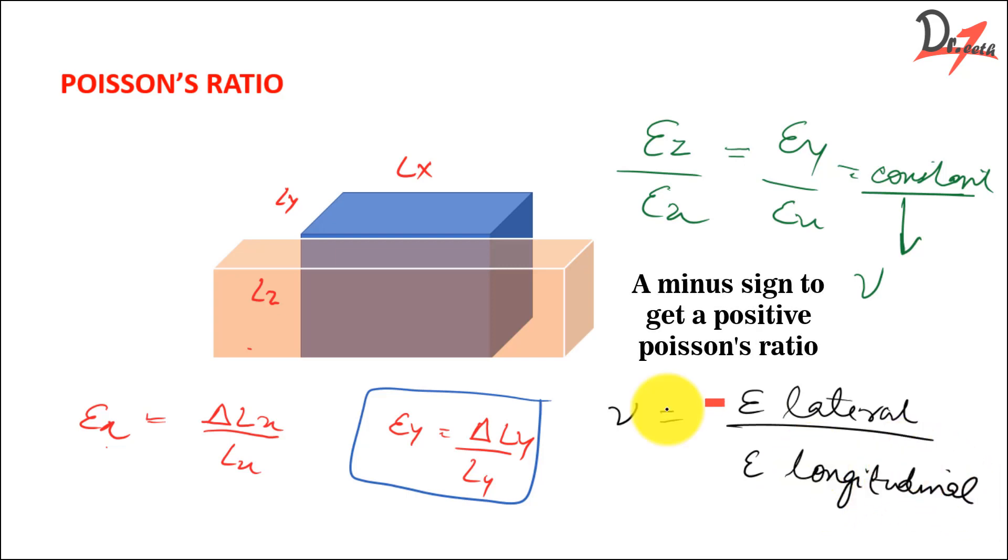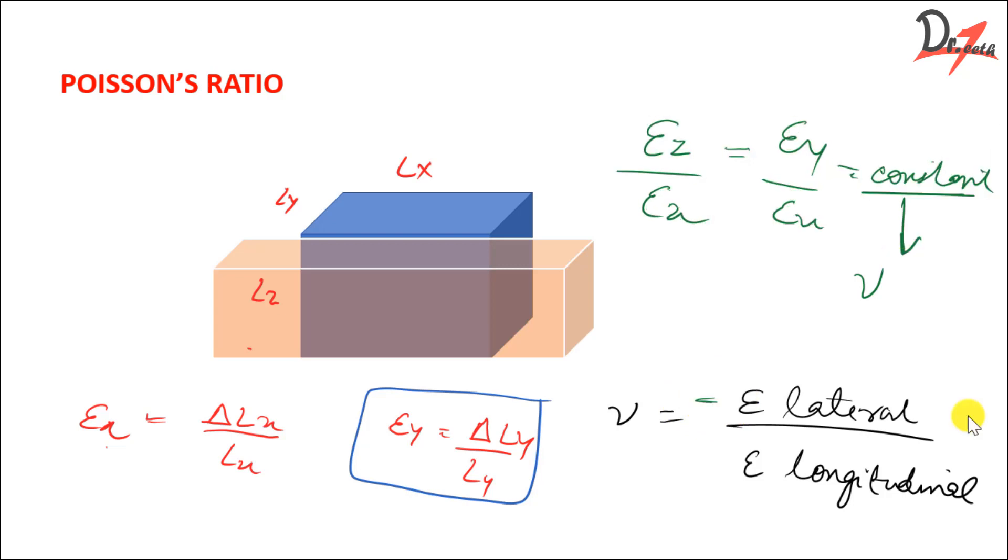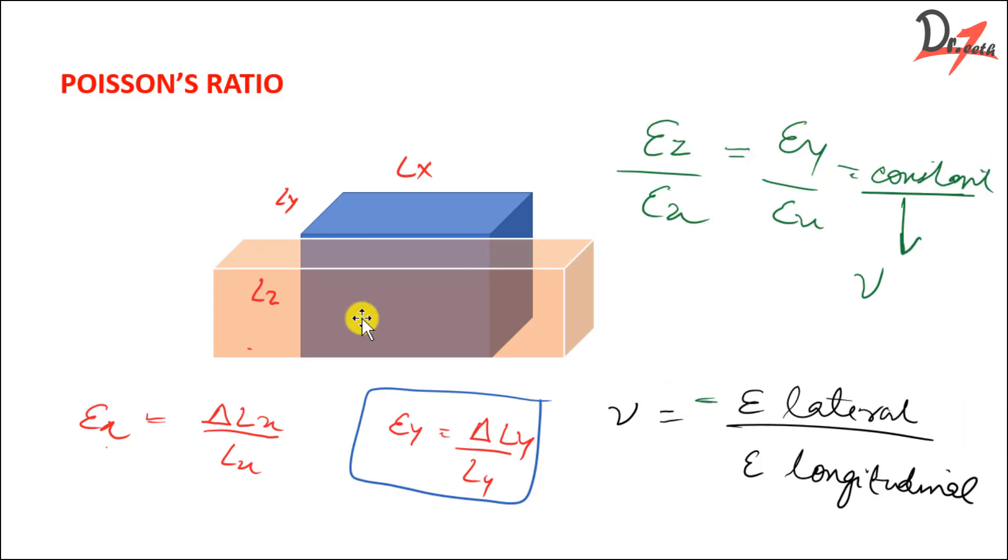The Poisson's ratio was named after Simeon Poisson. That is why we name it Poisson's ratio. Now to get a positive Poisson's ratio, sometimes we have to apply a negative sign here, depending on the type of force we are applying. Now keep in mind that for an ideal isotropic material of a constant volume, the ratio is 0.5. The Poisson's ratio is 0.5 and most engineering materials have values between 0.25 and 0.30.